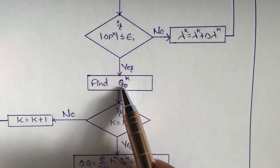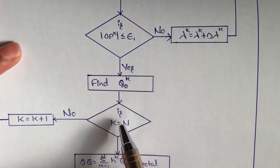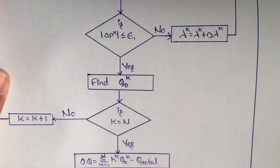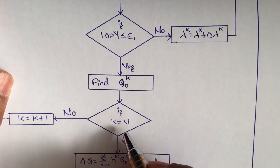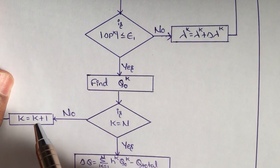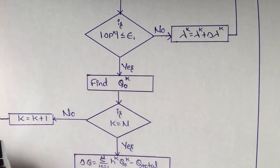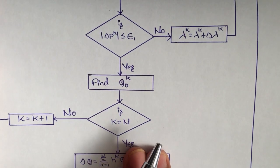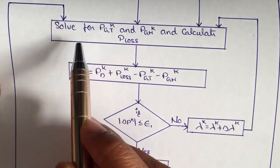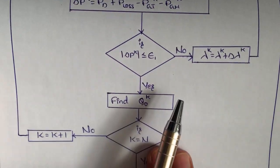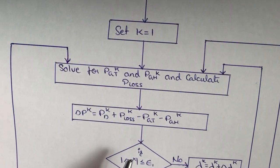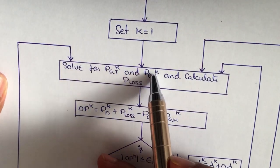After finding the value of q naught, we check whether the iteration has elapsed — that is, whether k has reached its final value N. If k has not reached N, we increase k by 1 (k = k + 1) and move back to recalculate PGT k, PGH k, and P loss.